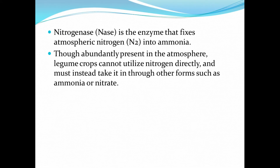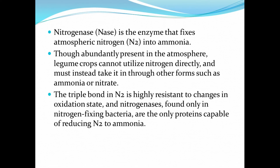Plants cannot use atmospheric nitrogen directly, so bacteria in the nodules of legumes are able to convert the atmospheric nitrogen into a form that plants can use. The triple bond in nitrogen is highly resistant to changes in oxidation states, and nitrogenases — found only in nitrogen-fixing bacteria — are the only proteins capable of reducing nitrogen to ammonia.